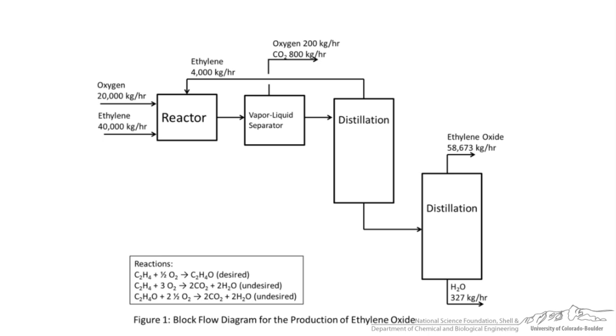This is an example of a block flow diagram, a BFD for short, for an ethylene oxide production process. Notice this is a very simple, bare bones diagram of an entire process all on one page.